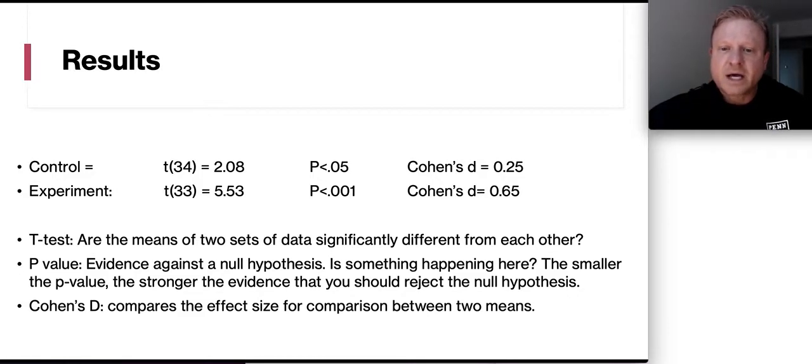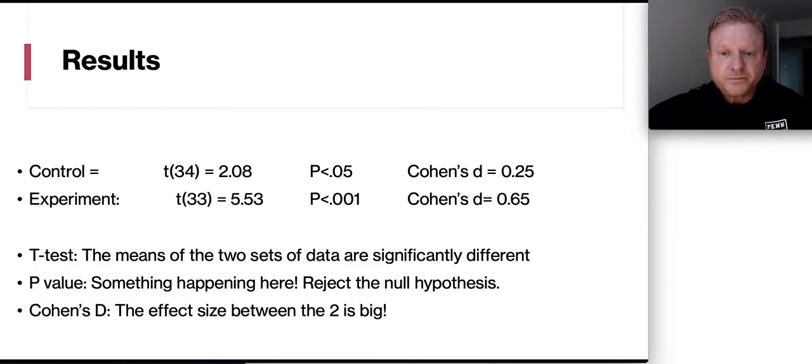In Cohen's D, that's comparing the effect size for comparison between two means. So you see the control group is to 0.25. But the experimental group, 0.65. So that experimental group had a really big difference. So again, let's take a look at that control group and the experimental. The t-test is the means of the two tests of data are actually significantly different. The p-value, something is happening here. We are rejecting the null hypothesis. In Cohen's D, the effect size between the two is big. So there's a lot different things happening in the experimental group versus the control group.